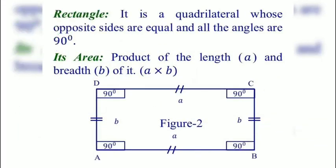A rectangle is a quadrilateral whose opposite sides are equal and all the angles are 90 degrees. Its area is the product of the length and breadth. Here in this figure, ABCD is a rectangle having length A units and breadth B units, so its area is AB square units.